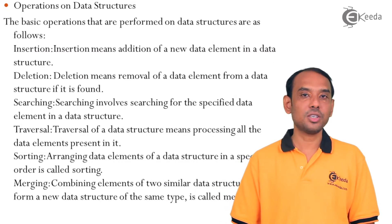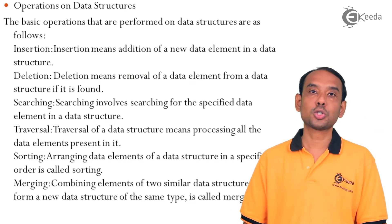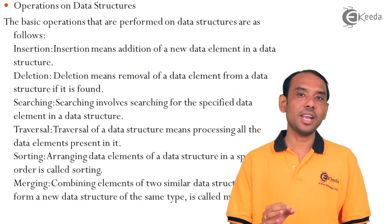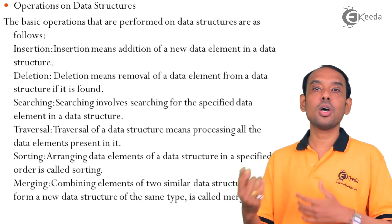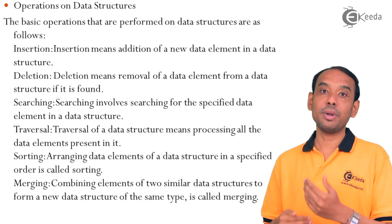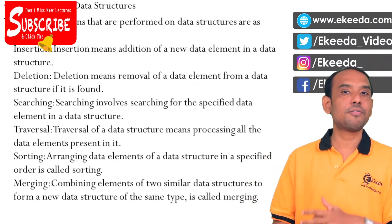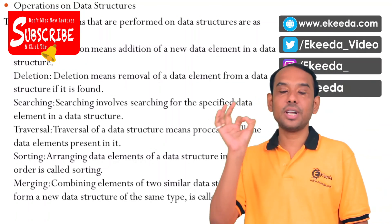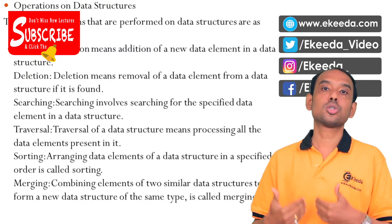The next set of operations which can be performed on a data structure is sorting. Sorting is basically arranging data elements in a particular order — it can be ascending order, descending order, or a user-defined order. Arranging data elements in a data structure is sorting.